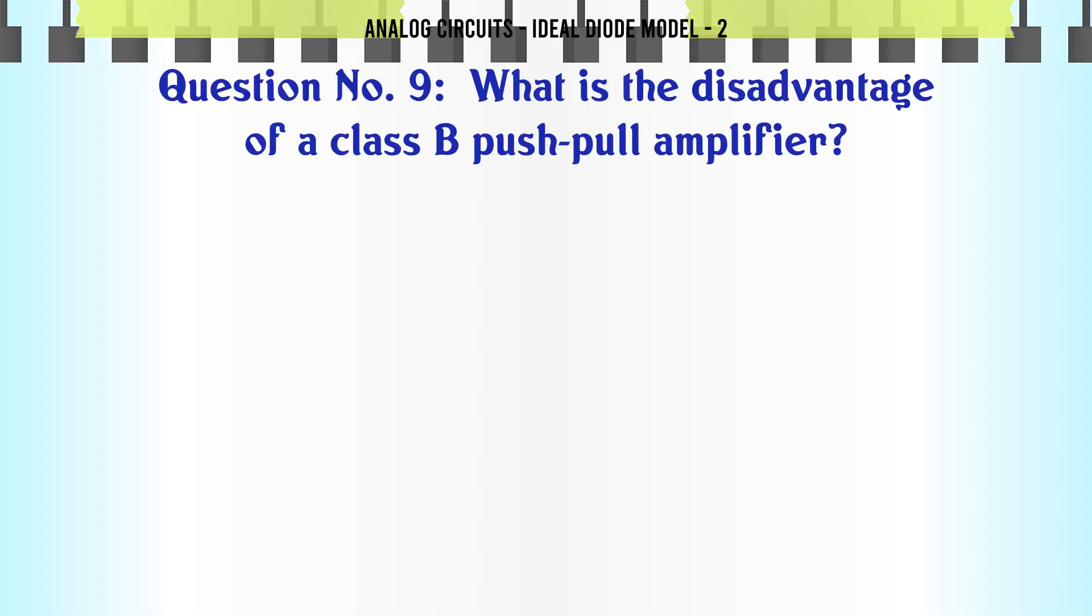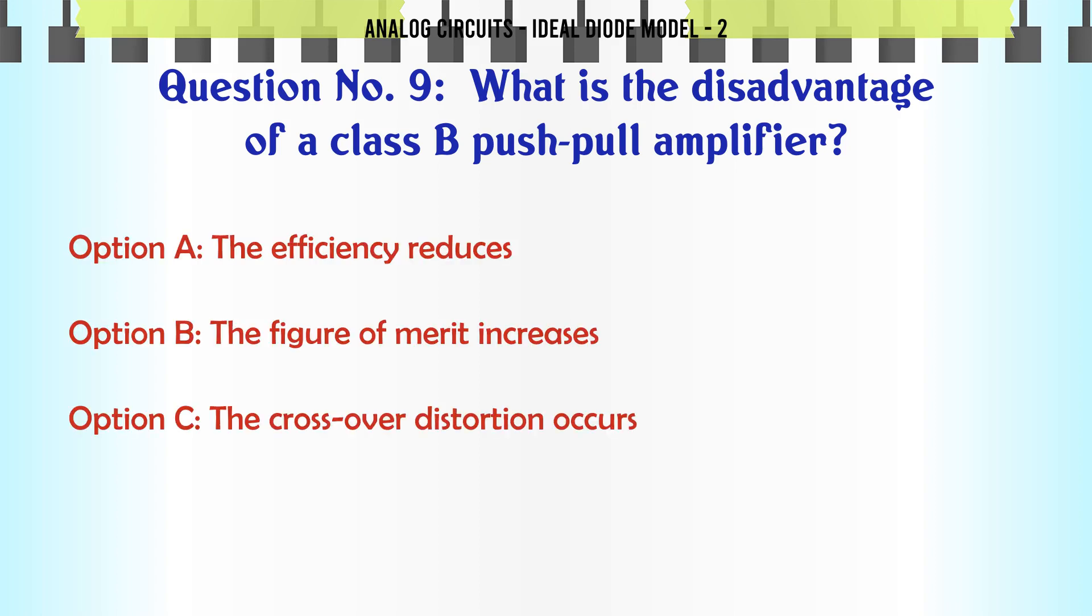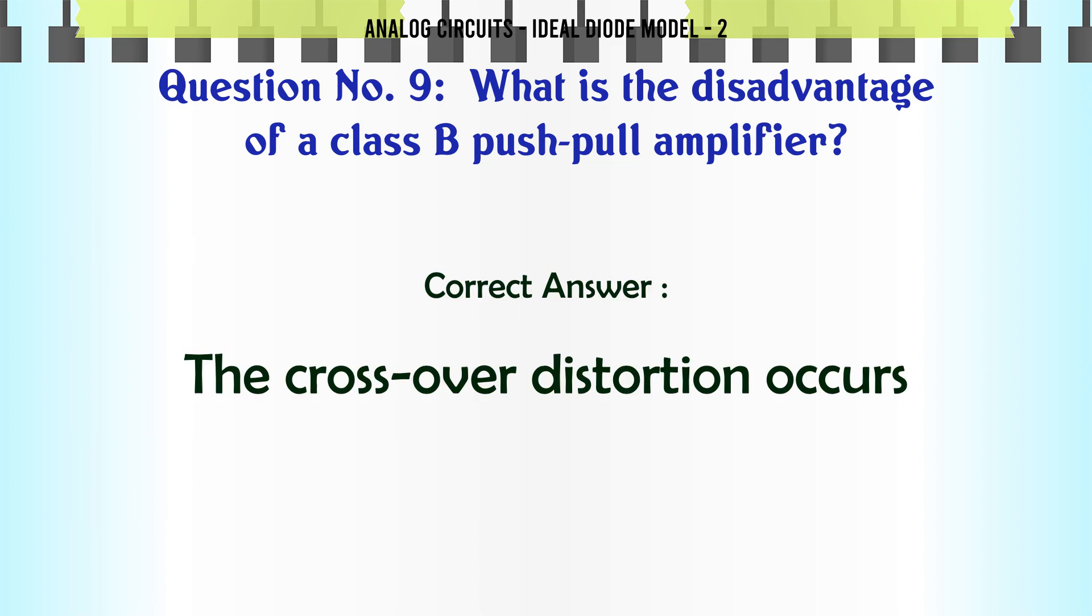What is the disadvantage of a class B push-pull amplifier? A) The efficiency reduces, B) The figure of merit increases, C) The crossover distortion occurs, D) The Q power dissipation is very large. The correct answer is: The crossover distortion occurs.